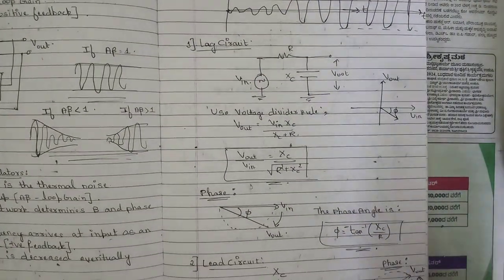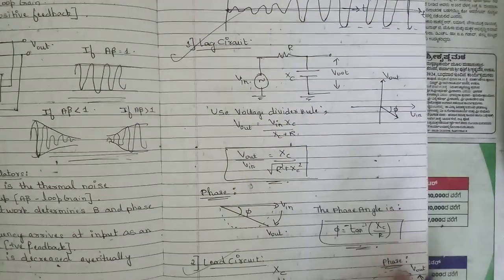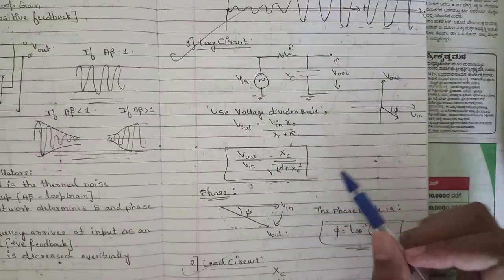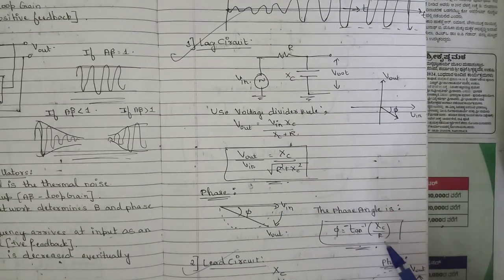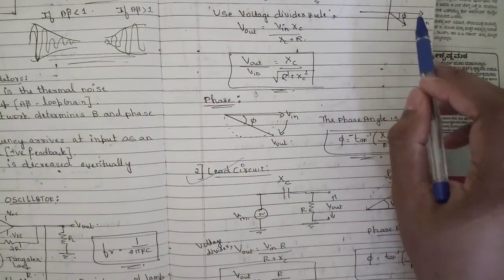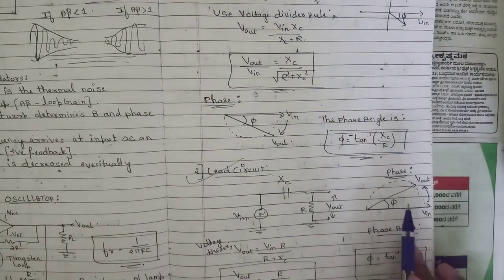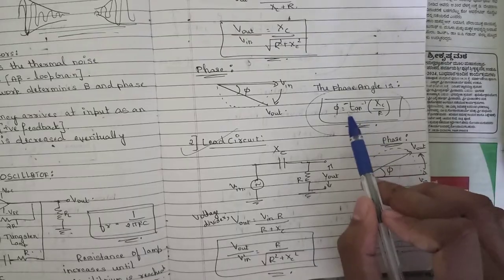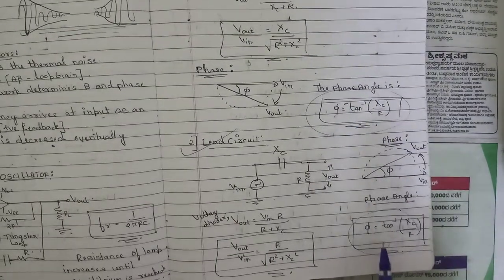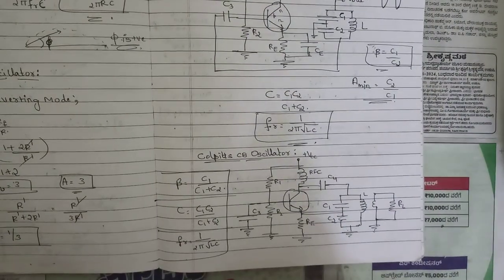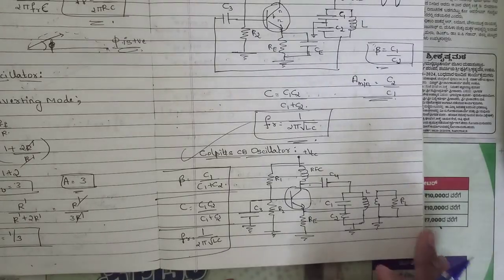One question on lead-lag circuits will be asked. Note the expressions for the transfer function Vout/Vin along with the phase angle expression and phasor diagrams for both lag and lead circuits. In the lag circuit, the phase angle is always negative: φ = −tan⁻¹(XC / R). In the lead circuit, the phase angle is always positive: φ = tan⁻¹(XC / R).